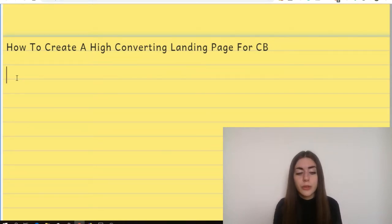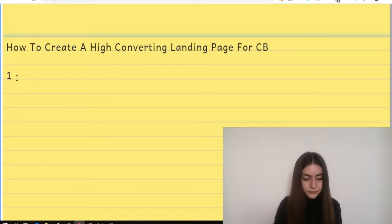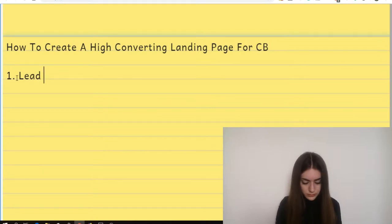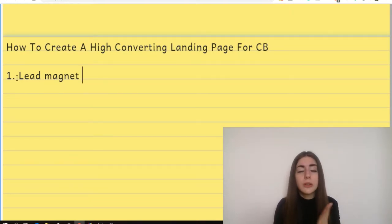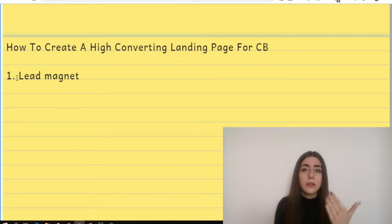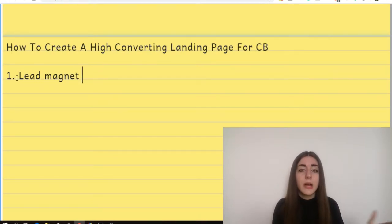Now, how to actually create a high converting one. Four elements — element number one: we need to have something called a lead magnet. Basically a lead magnet is that piece of value that solves a specific problem. People who are landing on your landing page have specific problems, challenges they want to solve, or maybe they want to achieve a particular goal or result. Basically this lead magnet will help them get to that result and will help them solve that problem.